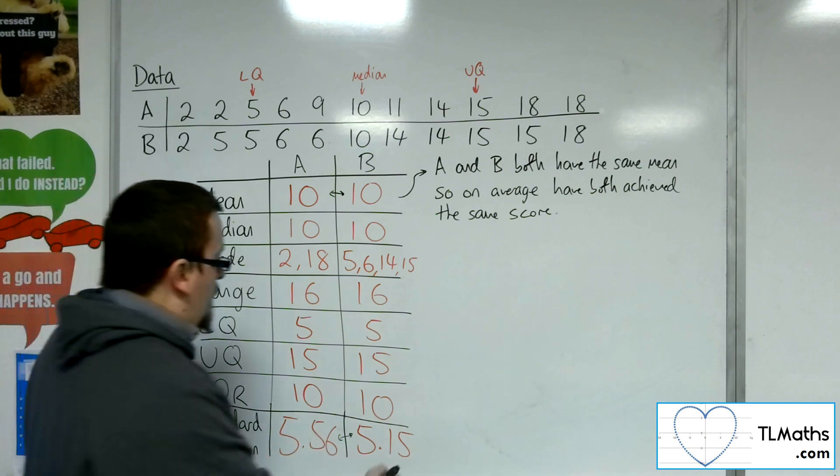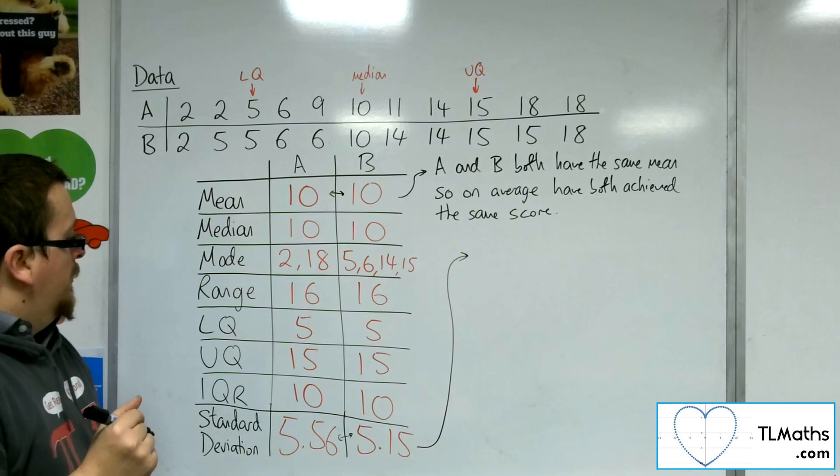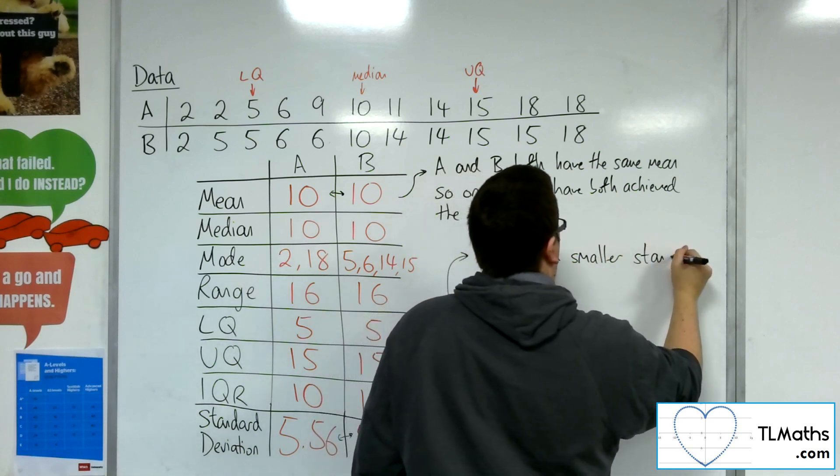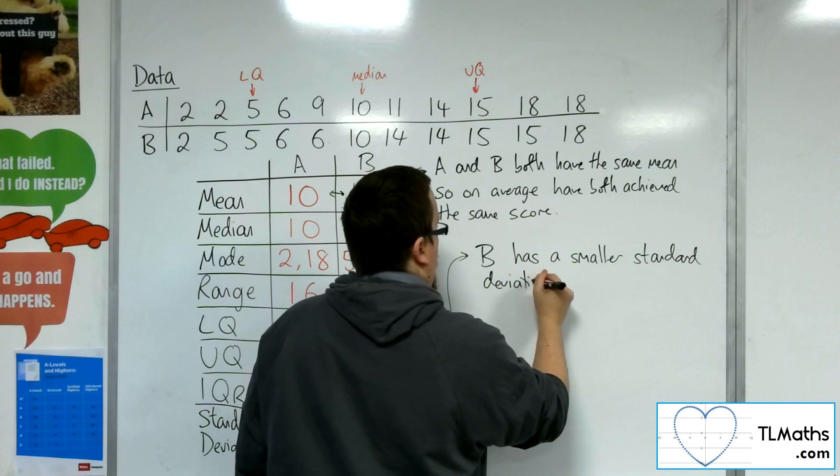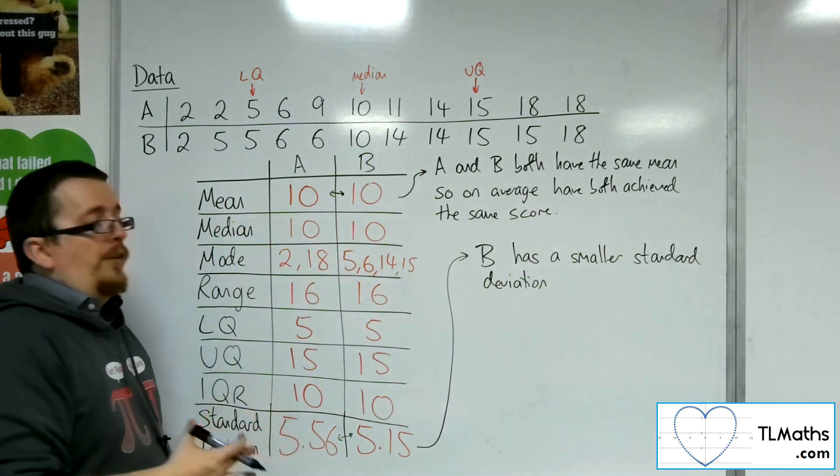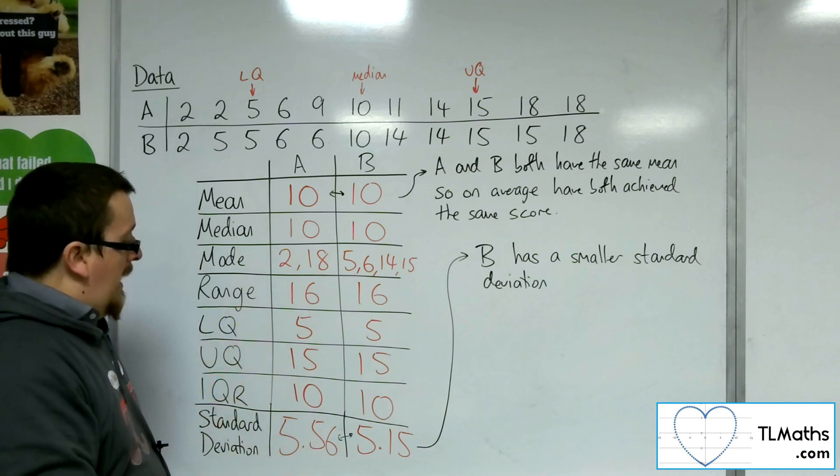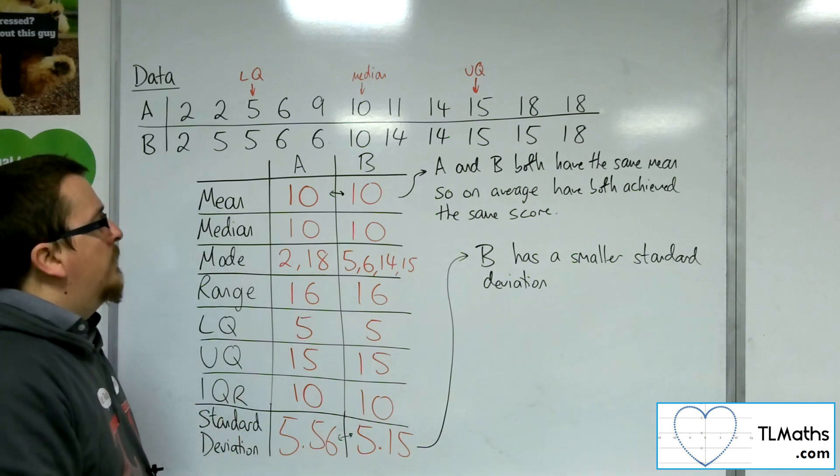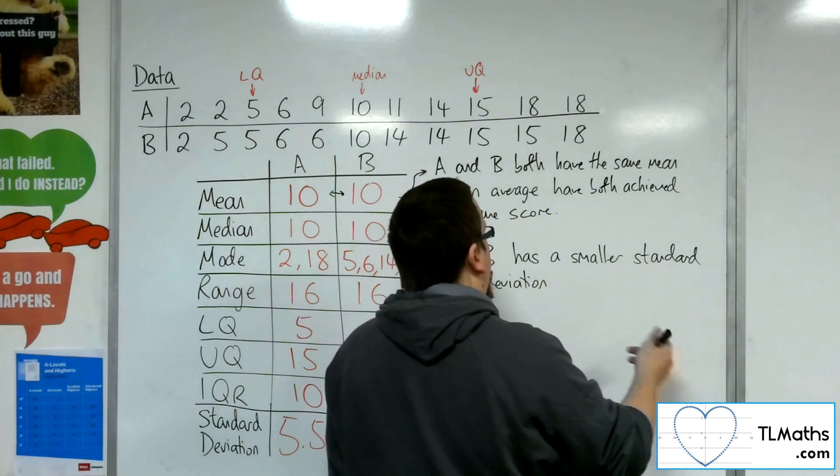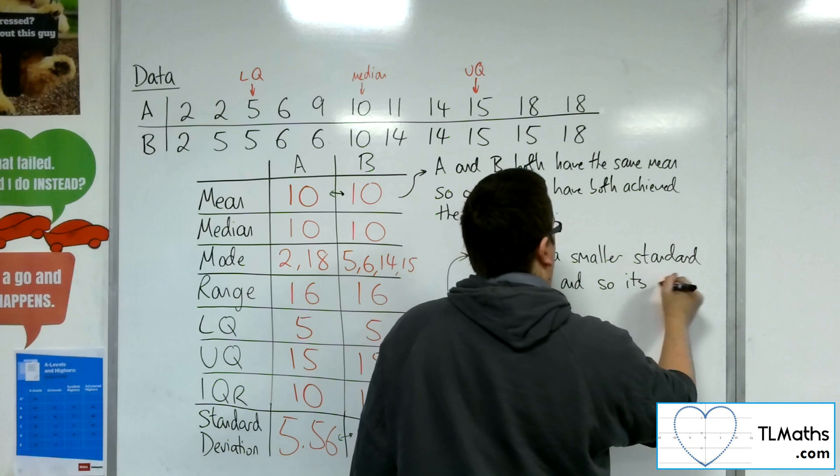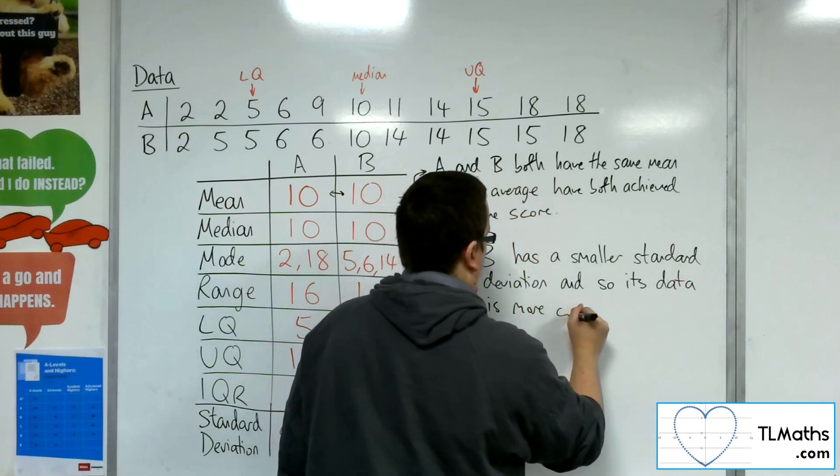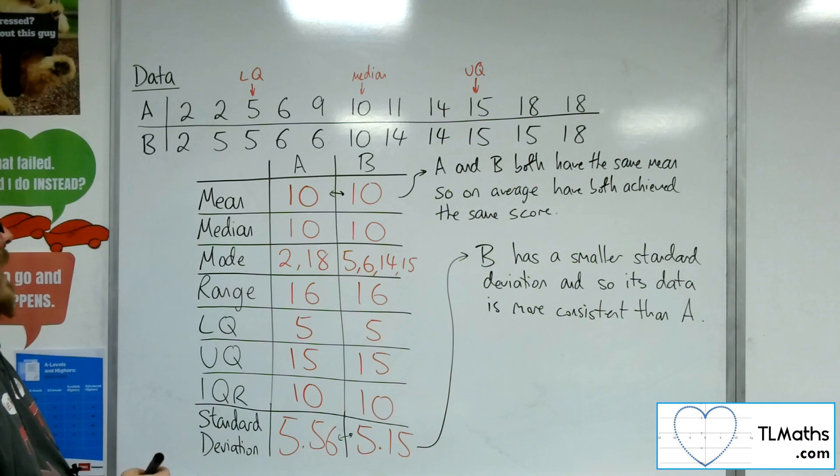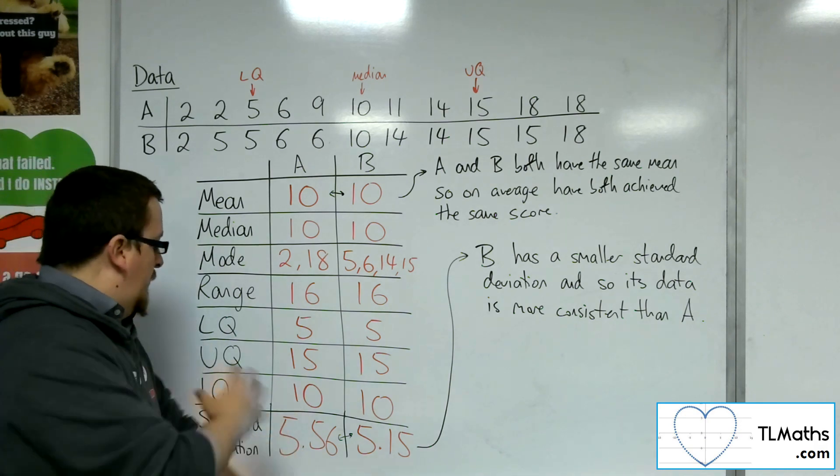Now as for this standard deviation, however, there is a difference. Class B has a smaller standard deviation. And remember, what that is telling you is the average distance the data points are away from the mean. And so because that number is smaller, those data points are on average closer together, and so they are more consistent. So B has a smaller standard deviation, and so its data is more consistent than A. That is what we can infer from comparing the means and the standard deviations.